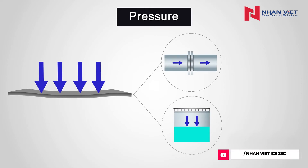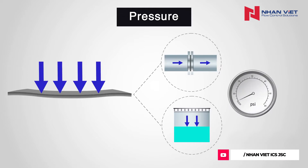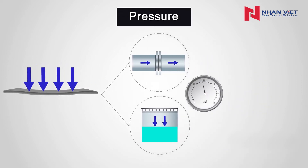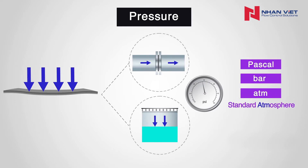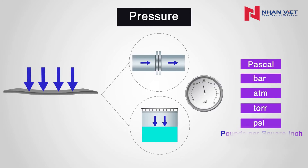Since pressure is a physical quantity, it can be measured. Pressure is measured in one of the following five units: Pascal, Bar, Standard Atmosphere, Torr, and pounds per square inch.